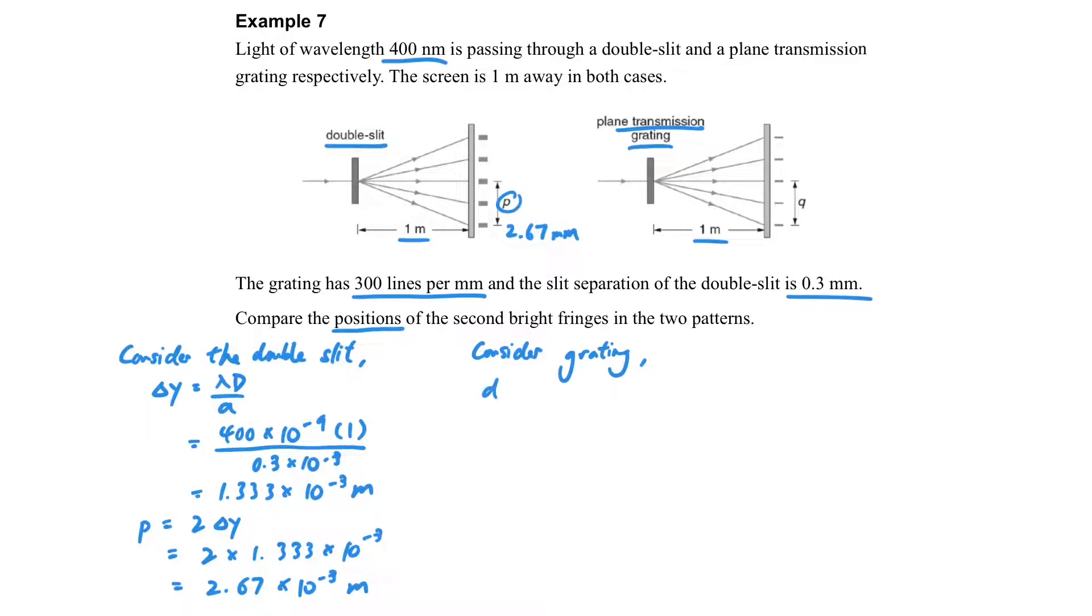And what if we consider grating? So if we have a grating, then we can't use delta y equals something because we don't have that equation for grating. So we can just use d sine theta equals n lambda, and we can find the theta first.